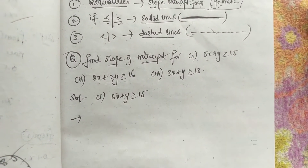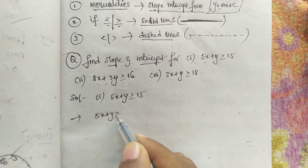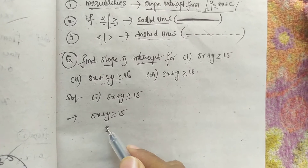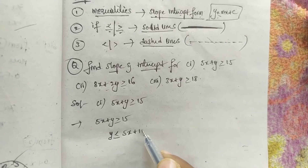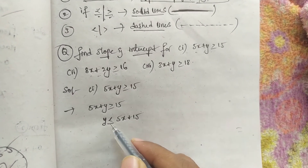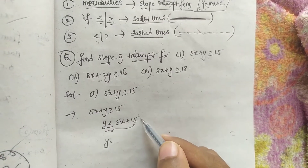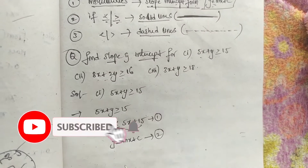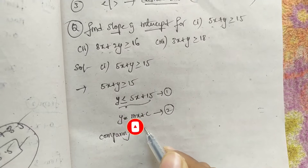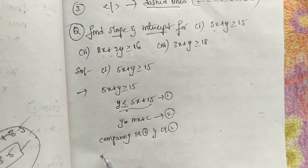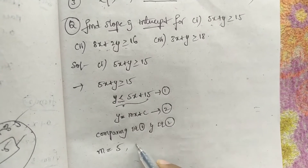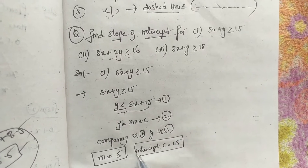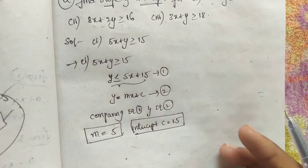The given question is an inequality type, so we change it into slope-intercept form. From 5x plus y greater than or equal to 15, we get y greater than or equal to negative 5x plus 15. This is equation 1. The slope-intercept form is y equals mx plus c — equation 2. Comparing equations 1 and 2, slope m equals 5 and intercept c equals 15.